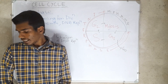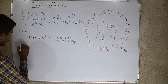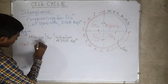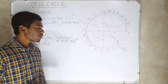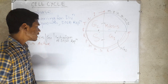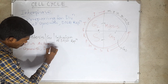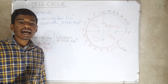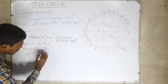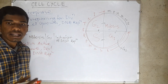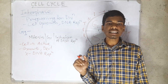In G1 phase, the cell is metabolically active, and continuous growth and development takes place. However, DNA replication does not take place in G1, or gap phase 1.